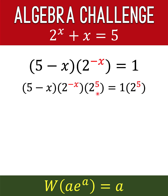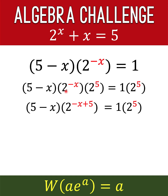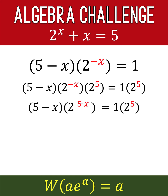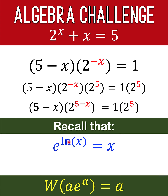We now have the exponent 5 minus x and the factor 5 minus x — both representing our a. But the base is still 2; we want the base to be e. We can rewrite 2 raised to 5 minus x in a form containing e, recalling that e raised to ln of x equals the input x, because e and ln are inverse operations. So if we input 2 raised to 5 minus x into e raised to ln of that input, the result is just that input.